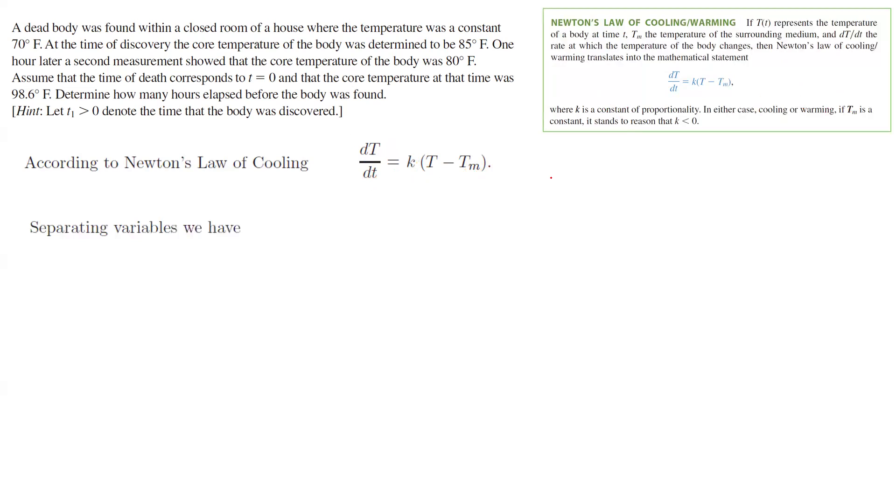So how do we solve this problem? This is a separable differential equation. You can write it as dT divided by T minus T sub m. On the right-hand side, you have K times dt. Now I'll take the integral of both sides and apply what you learned in calculus. On the left-hand side, the integral of dT divided by T minus T sub m is nothing but ln of absolute value of T minus T sub m. On the right-hand side, the integral of K dt is Kt plus C.